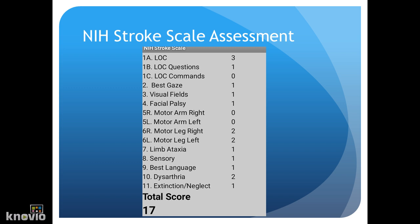Section 2 is to test horizontal extraocular movements. If they are able to perform extraocular movements, this is normal and they'll get zero points. Section 3 is visual fields. If they have no visual loss, this is zero.